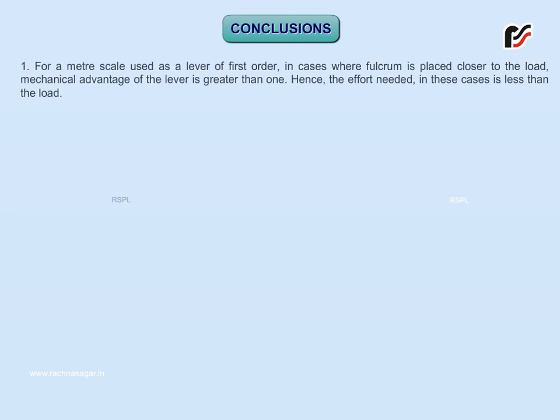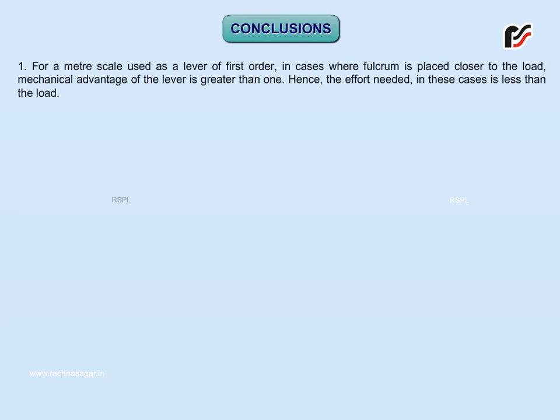Conclusions. For a meter scale used as a lever of first order, in cases where fulcrum is placed closer to the load, mechanical advantage of the lever is greater than 1. Hence, the effort needed in these cases is less than the load. The mass of the given meter scale as calculated by applying the law of levers is found to be dash gram.